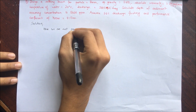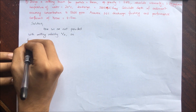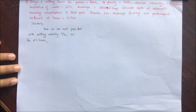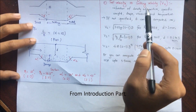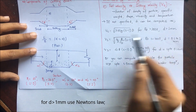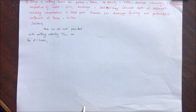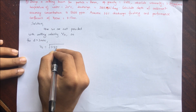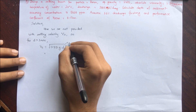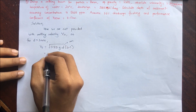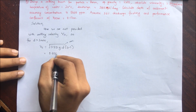We are not provided with settling velocity vs. For diameter of particles greater than 1 mm, we use Newton's law formula: vs = √(3.33 × g × d × (s − 1)). Substituting g = 9.81 m/s², d = 8 mm, and s = 2.65, this gives vs = 0.6566 m/s.